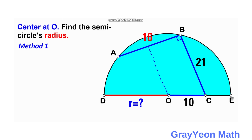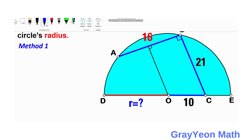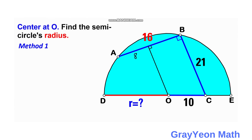This line from the center should be perpendicular to AB. Since that is a perpendicular bisector, the segment from A to the midpoint is 8 units, and the other half is also 8 units.